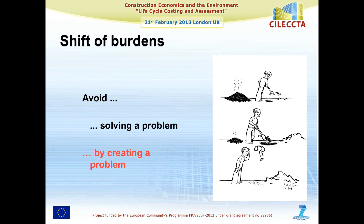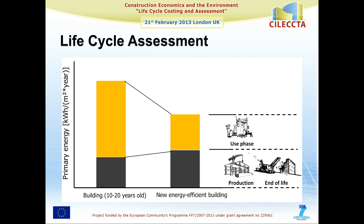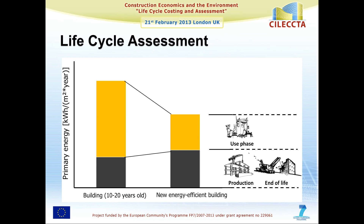Here's a simple example: just the primary energy demand for the life cycle of two buildings — one around 20 years old, created in the 90s, and another a new energy-efficient building. If you only look at the construction phase, the building from the 90s appears the better choice, because you need less energy to construct it — less materials, less insulation materials. But if you look at the operation phase, with better insulation you can significantly reduce the energy demand, so the overall life cycle impact is much lower for the new building. You wouldn't notice this if you only look at one life cycle stage.